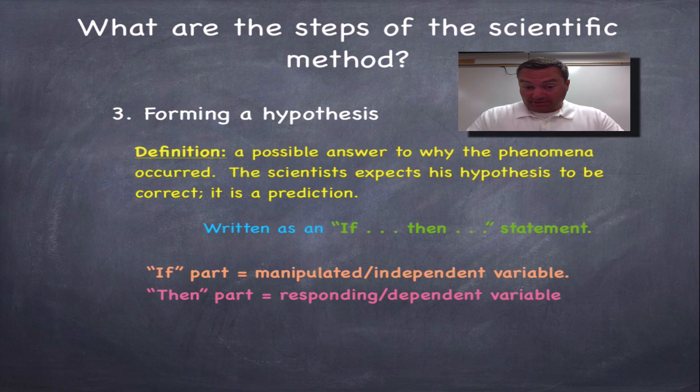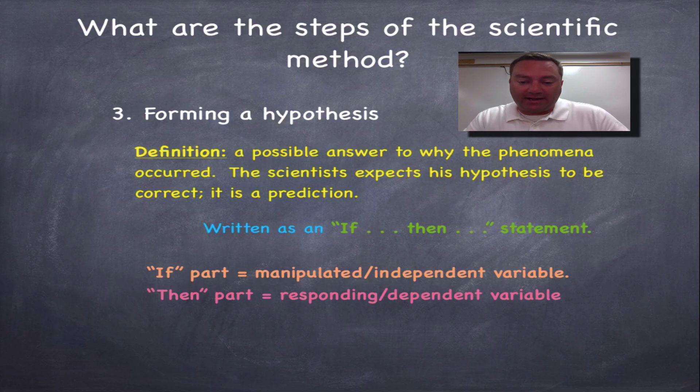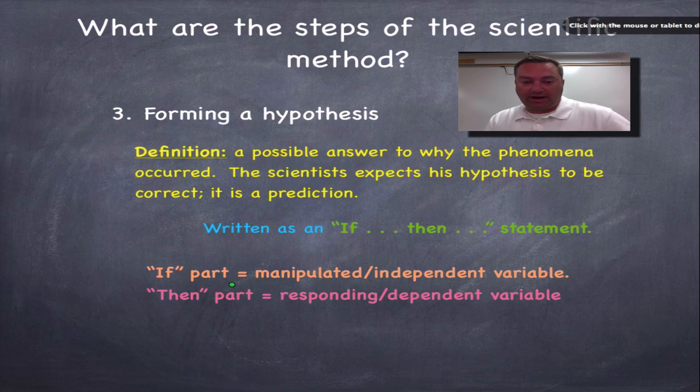Form a hypothesis. The definition of hypothesis, according to your book, is it's a possible answer to why the phenomena occurred. The scientist will expect his hypothesis to be correct. It is, in fact, a prediction. Now, you are going to write your hypothesis. Your hypothesis will be written always in an if-then statement.